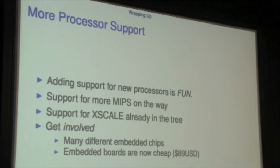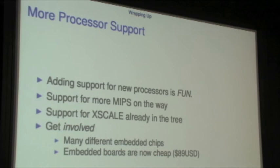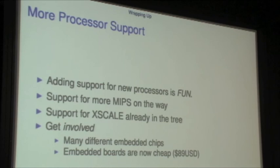Adding support for new processors is fun. Support for more MIPS is on the way. XScale is already in the tree. There are a lot of embedded chips, and I've done embedded systems for a long time — I think they're really a lot more fun than desktop systems. First of all, they're smaller and quieter, and these things are now really cheap. When I started doing embedded work, the machine next to my desk was $5,000 — now I can have one of these things for $89, or an Octeon 2 for $33. There is more of this on the way: I'm looking at two new MIPS ports, and I know people are looking at more PowerPC stuff.